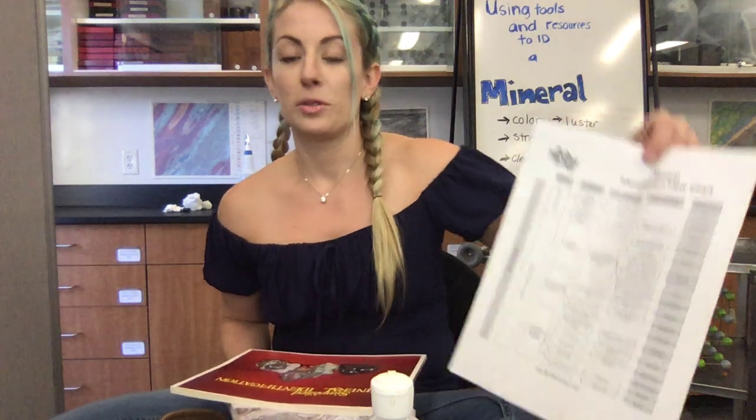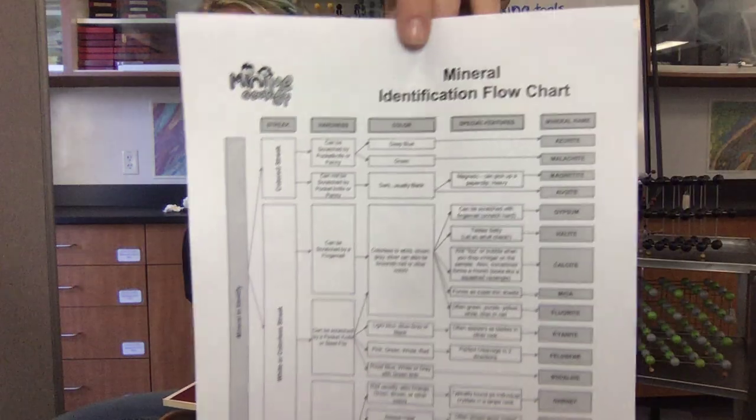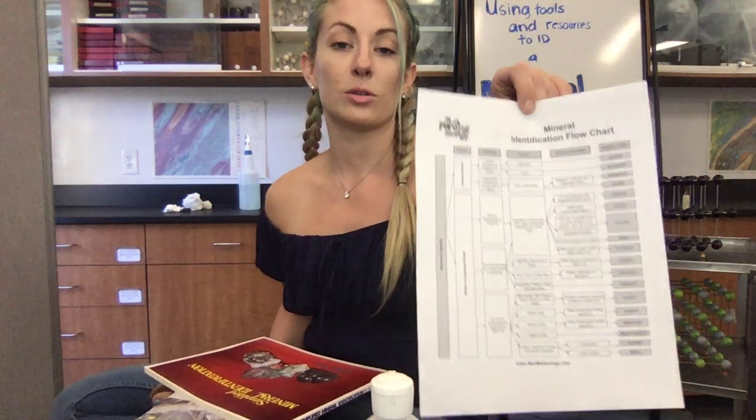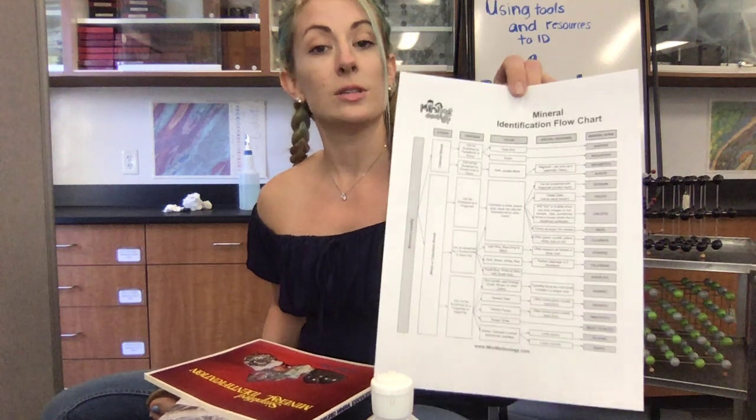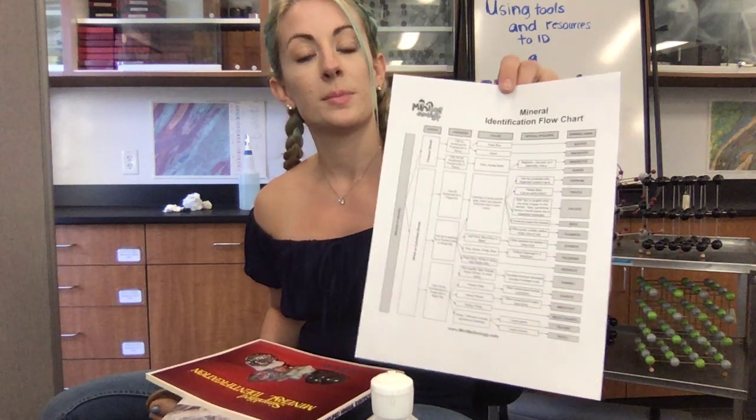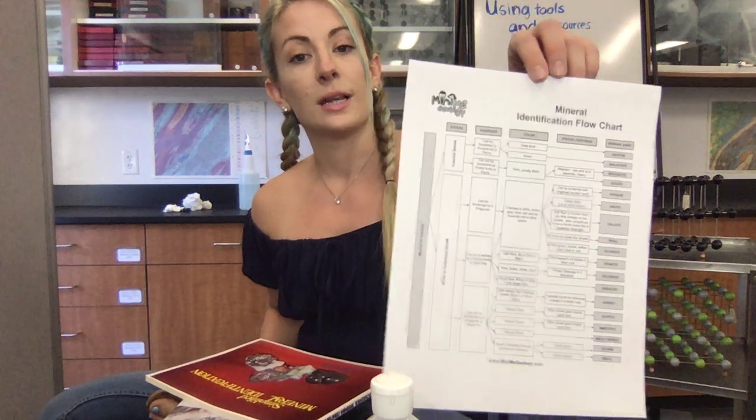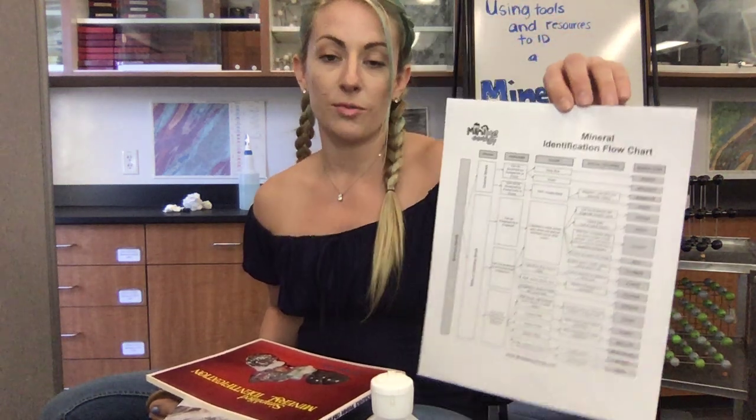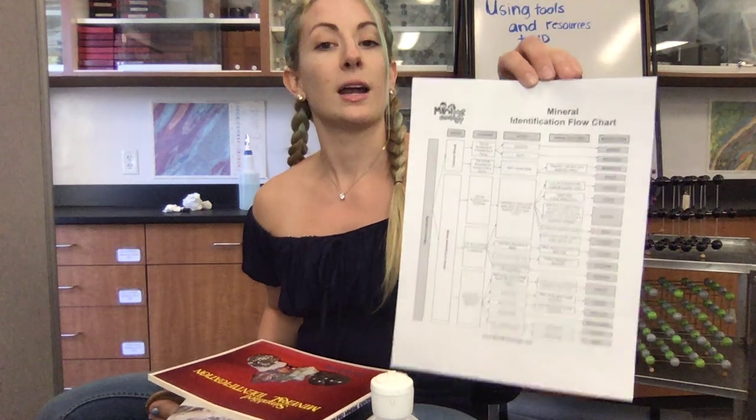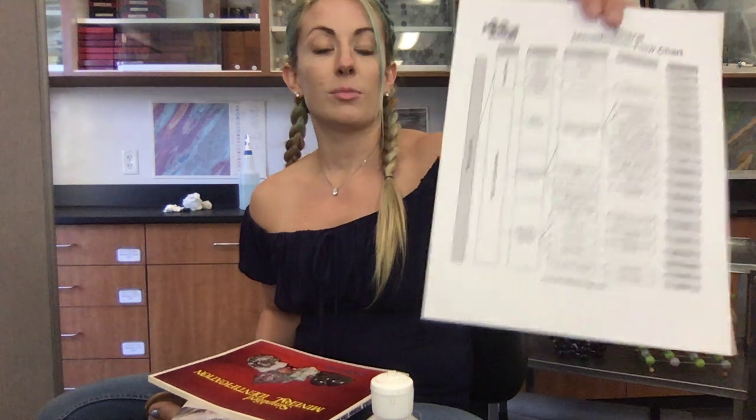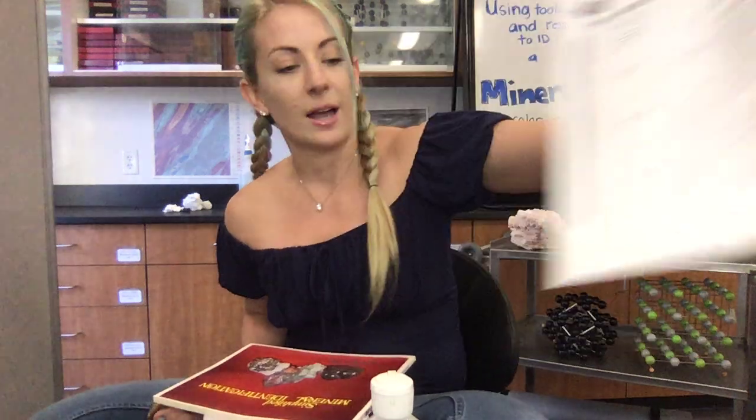Our microwave or toaster oven kind of tool is this flowchart that I put up on Canvas. This is the sample ID mineral chart. You're going to be using this for your homework to apply these concepts. So it might be helpful to download or print this chart. You could also just view it in the tab and flip back and forth to help you identify the 15 minerals that we won't be covering right now. So this is going to be our simple ID chart.